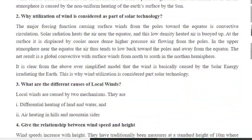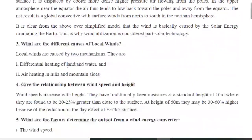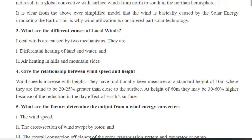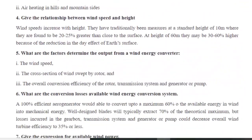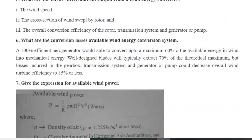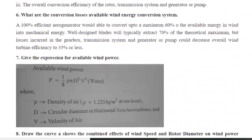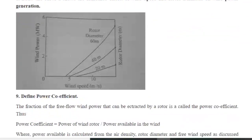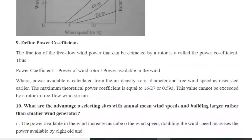Similarly in case of wind energy: define wind, why utilization of wind is considered as part of solar technology, what are the different causes of local winds, give the relationship between wind speed and height, what are the factors that determine the output from a wind energy converter, what are the conversion losses available in wind energy conversion systems, and give the expressions for available wind power. All short answer questions have been given in this page.